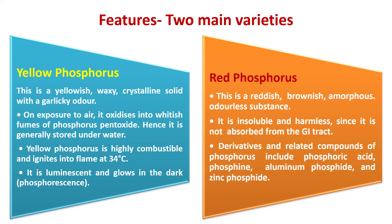Yellow phosphorus is luminescent and glows in the dark. That is why the term used here is phosphorescence — it is luminescent, which means it gives light. The next is about features of red phosphorus. Red phosphorus is a reddish, brownish, amorphous substance.